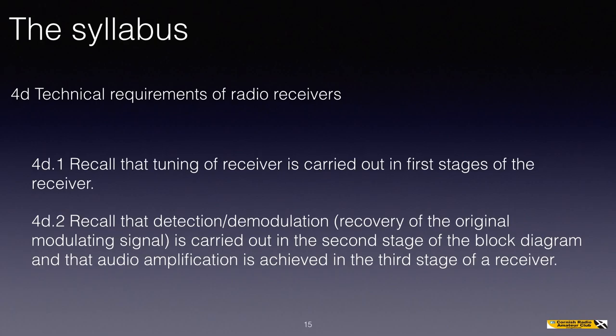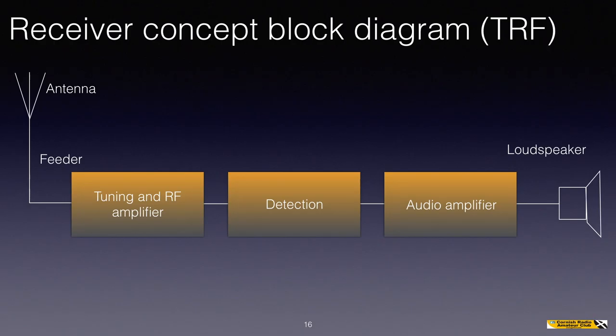So that's it then for receivers. Let's look once again at the concept block diagram. There it is: the antenna going to a feeder, going to tuning and RF amplifier — the so-called front end — going to detection, either called detection or demodulation, which recovers the audio from the carrier, and that small audio level being passed to an audio amplifier, which boosts the level so that it can drive a loudspeaker.